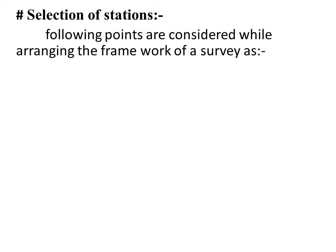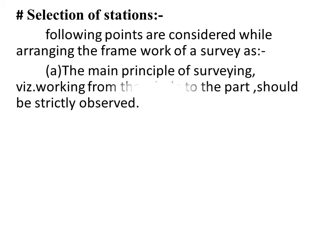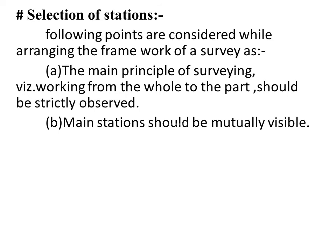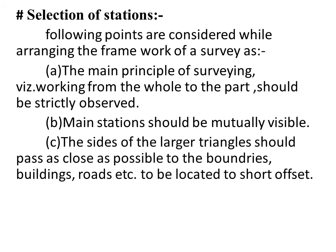The next point is the selection of stations. The main principle of survey line should be strictly observed. The main stations should be mutually visible. The sides of the larger triangle should be passed as close as possible to the boundaries, buildings, roads, etc., to keep offsets short.